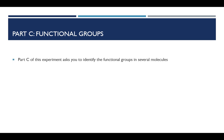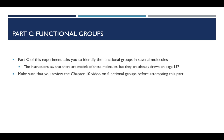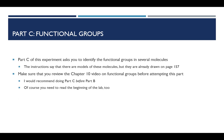Part C requires you to identify functional groups that you will see in several molecules. The instructions tell you that you are supposed to be observing models of these molecules, but the molecules you are supposed to observe are already drawn for you on page 157. Several additional molecules also appear at the bottom of page 157 and the top of 158 for you to identify. Be sure to look at the chapter 10 video specifically on functional groups before you attempt this part. I would actually recommend doing part C before part B, since the material on functional groups comes before the material on naming. Also be sure to read the beginning of the lab because it illustrates all the functional groups that you need.